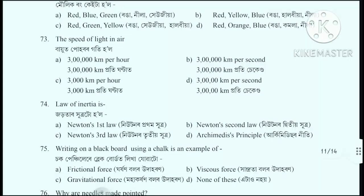Question number 73: The speed of light in air - the speed of light in air. The correct answer is option B: Three lakh kilometers per second (3,00,000 km/s).